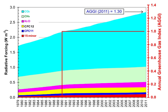The contribution of each gas to the greenhouse effect is determined by the characteristics of that gas, its abundance, and any indirect effects it may cause. For example, the direct radiative effect of a mass of methane is about 84 times stronger than the same mass of carbon dioxide over a 20-year time frame, but it is present in much smaller concentrations so that its total direct radiative effect is smaller, in part due to its shorter atmospheric lifetime.